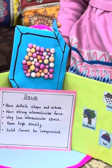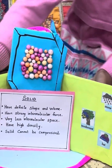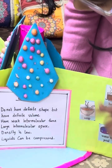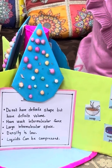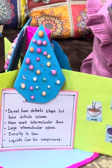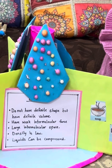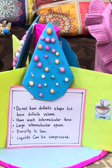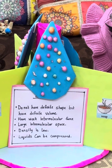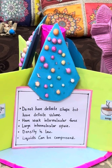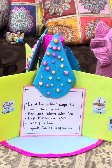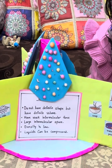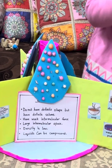And what about the liquid? Liquids don't have definite shape, but have definite volume. They have weak intermolecular force. Large intermolecular space. Density is low. Liquids can be compressed.